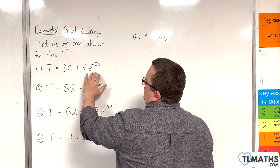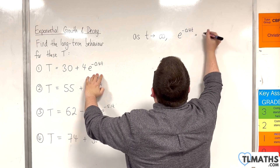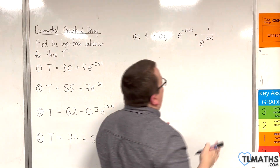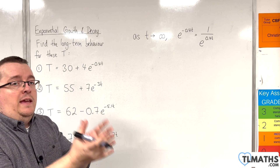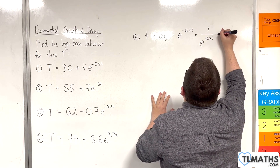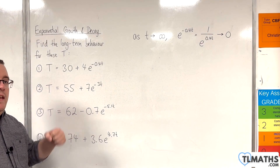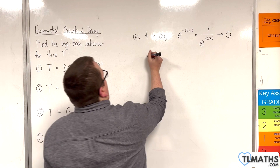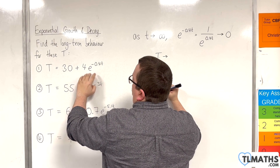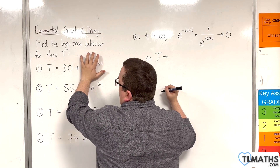Now, in here we've got e to the minus 0.4t. Because of that negative power, e to the minus 0.4t is the same as 1 over e to the 0.4t. And as t tends to infinity, e to the 0.4t gets larger and larger and larger. So, 1 divided by this larger and larger number means that is approaching 0 — that tends to 0 as t tends to infinity. So, capital T will tend towards 30 plus 4 lots of something that is tending to 0, meaning the temperature will be tending towards 30.